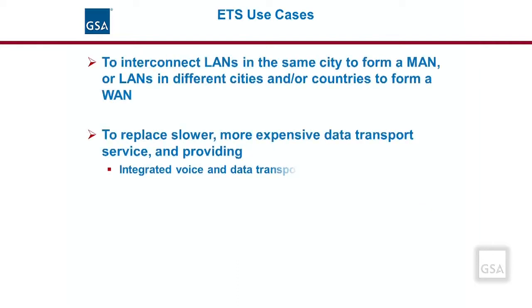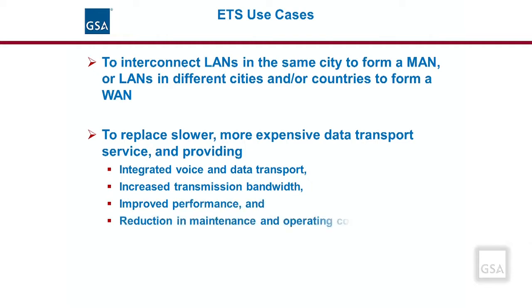Some use cases for Ethernet transport service are provided here. An agency could use Ethernet transport services in a multipoint-to-multipoint configuration to interconnect LANs in the same city to form a MAN, or LANs in different cities and/or countries to form a WAN. Such configurations could give agency personnel transparent access to the organization's combined information throughout a city, the country, or the world. An agency could also use ETS to replace a slower, more expensive data transport service, resulting in integrated voice and data transport, increased transmission bandwidth, improved performance, and a reduction in maintenance and operating costs.